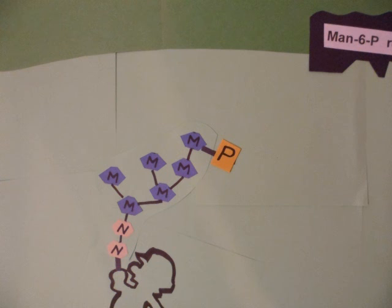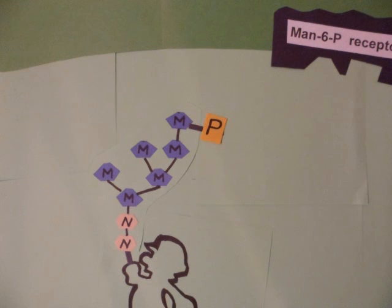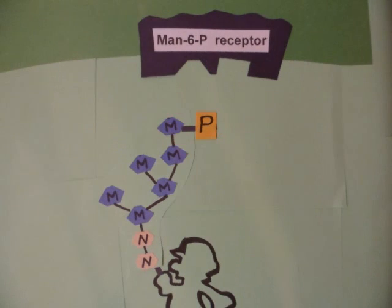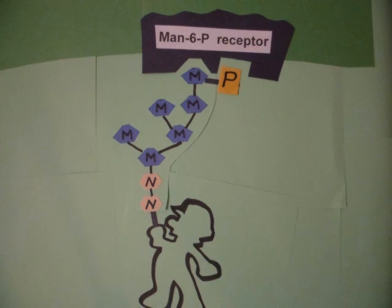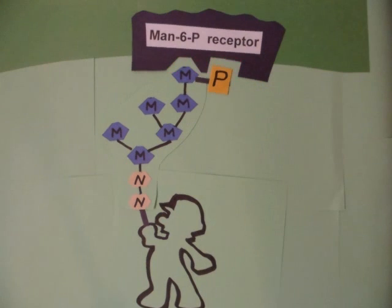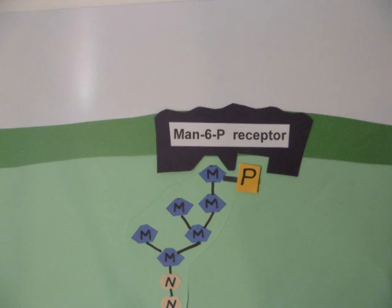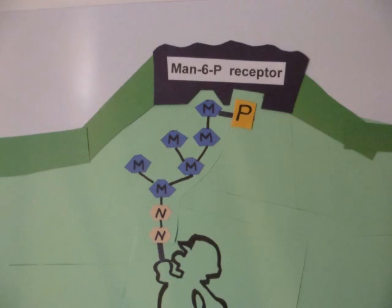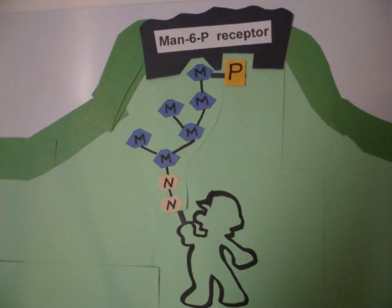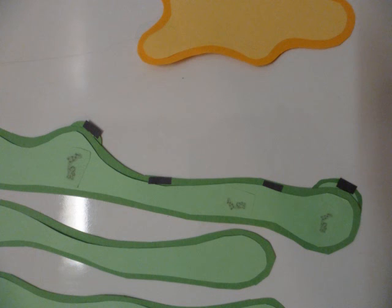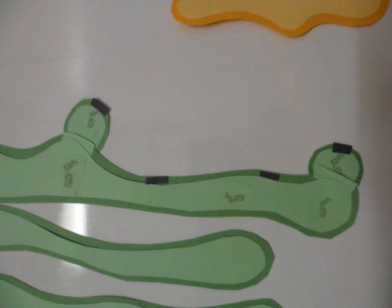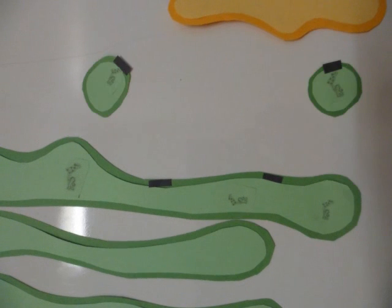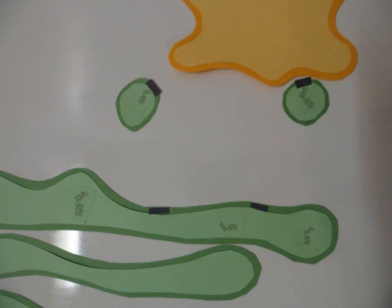This marker has high affinity binding to mannose-6-phosphate receptors on the trans-Golgi membrane. Binding of the ligand to the receptor initiates a transport mechanism via a coated vesicle and delivers it to the prelysosomal staging area, or endosome.